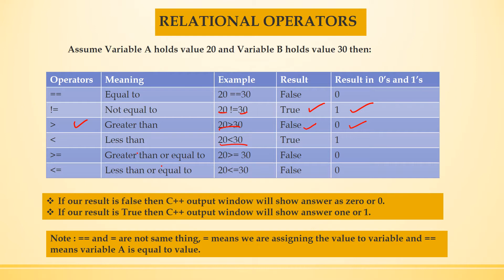Less than: 20 is less than 30, so we will get true value and the result would be 1. Greater than or equal to: 20 is greater than or equal to 30 — it is false, so we will get 0. And less than or equal to: 20 is less than or equal to 30 — result is false and we will get 0 as an answer.